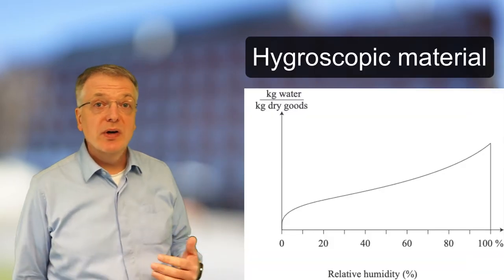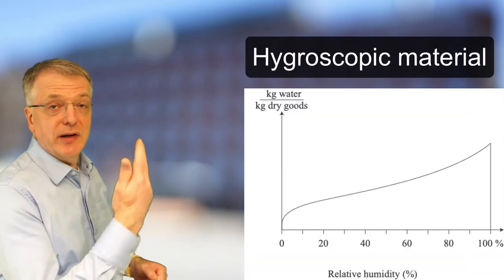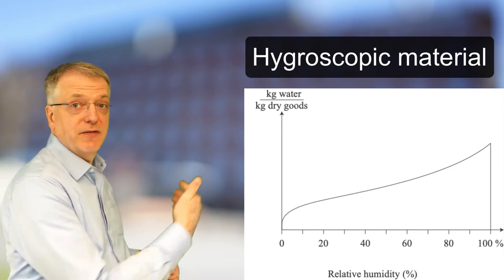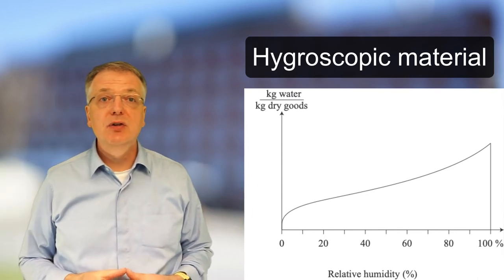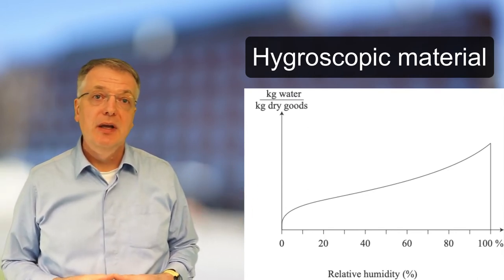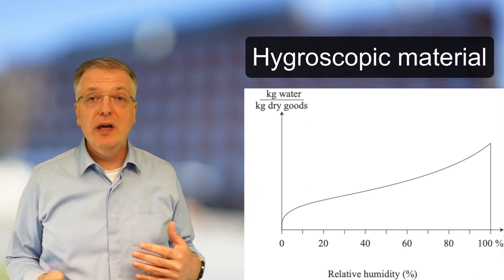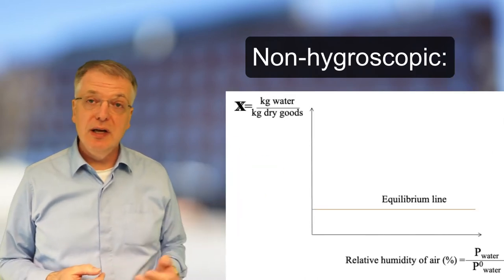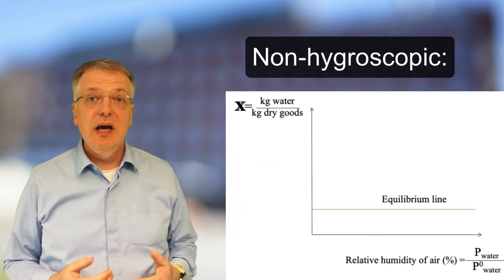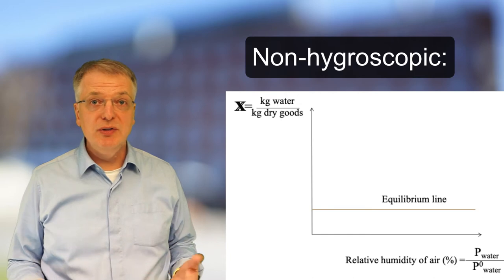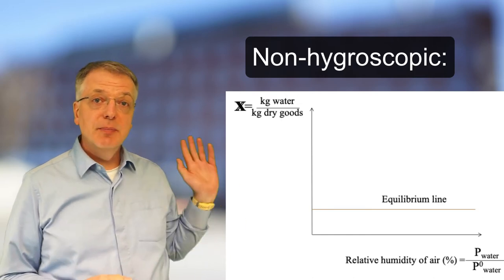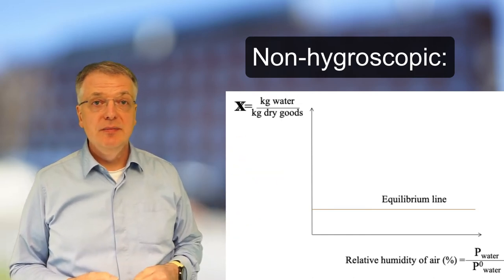To describe a hygroscopic material, we draw a graph of the equilibrium water content as a function of the relative humidity. For a non-hygroscopic material, we just get a horizontal line at the minimum water content, possibly zero, that is independent of the relative humidity.